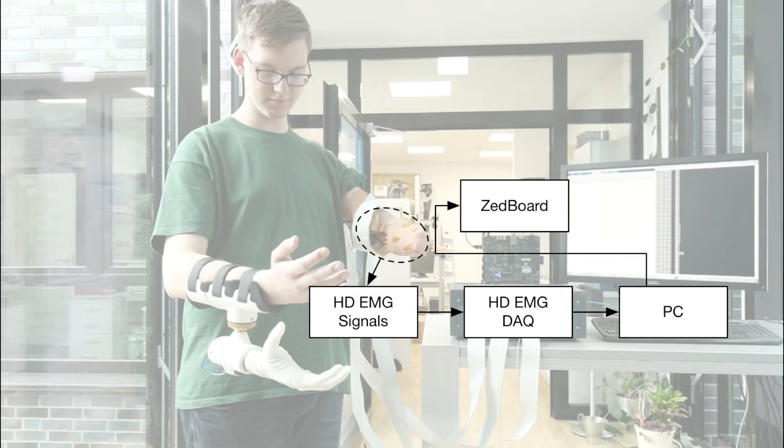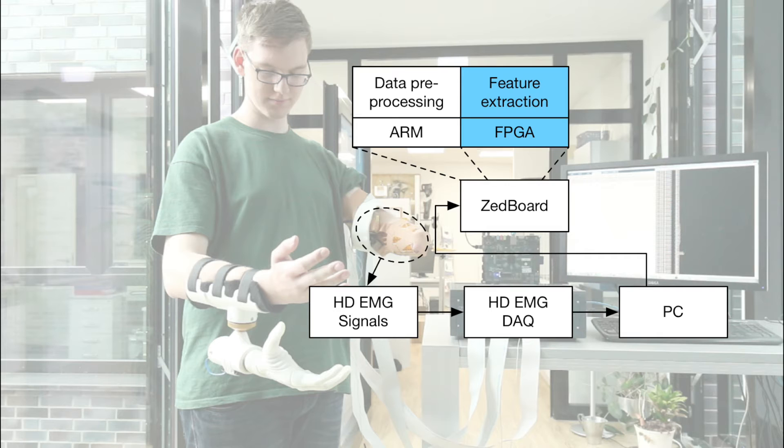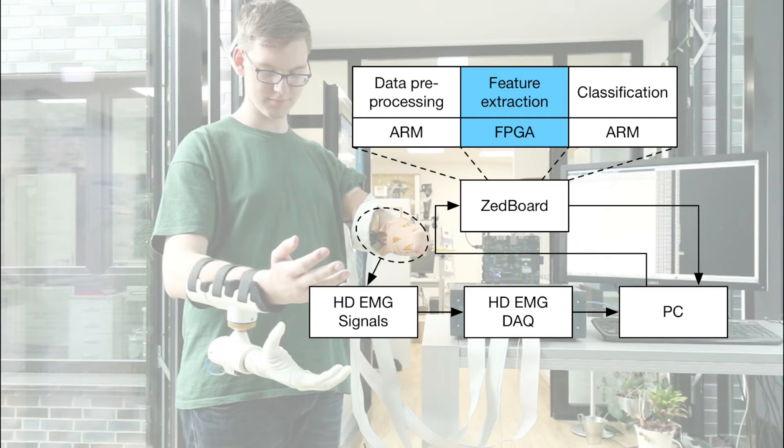Next, four kinds of features are extracted from the data. This is the most time-consuming step, so we used Vivado HLS to develop an FPGA core for parallel processing. Finally, a pattern recognition classifier predicts the intended movement, which is sent to a commercial prosthesis via Bluetooth by the PC.